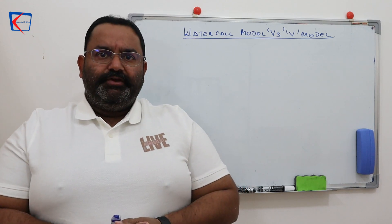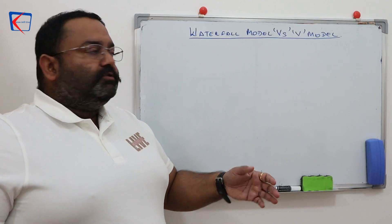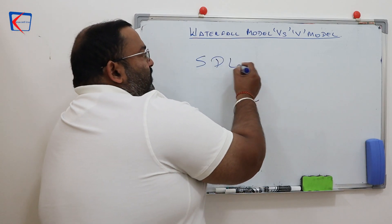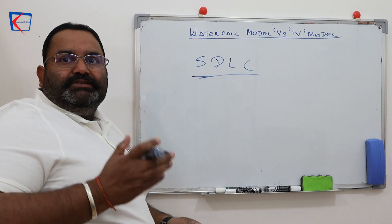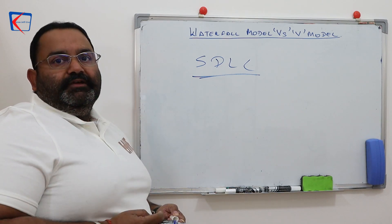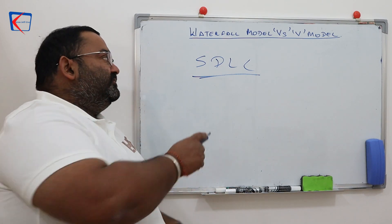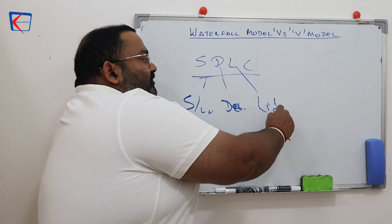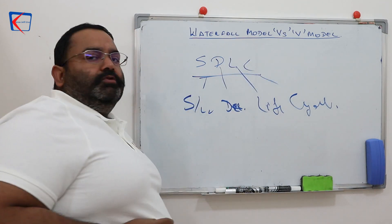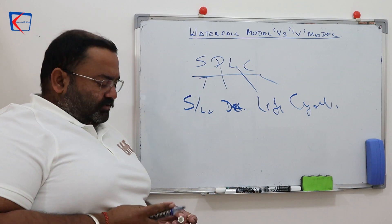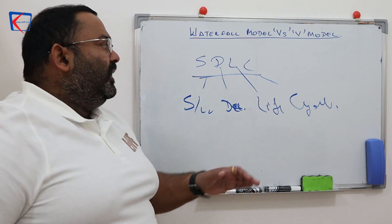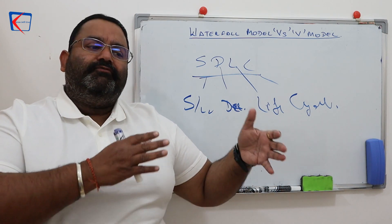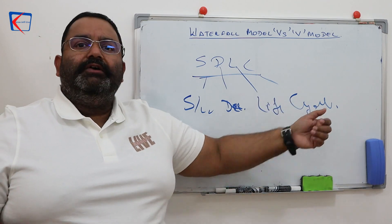Whether it is the waterfall model or the V model, both of them follow the SDLC. SDLC stands for System Development Life Cycle, or if you are software engineering students, it stands for Software Development Life Cycle. Both models follow SDLC. For a full detailed video on SDLC and its different stages, the link will be in the description section for your reference.